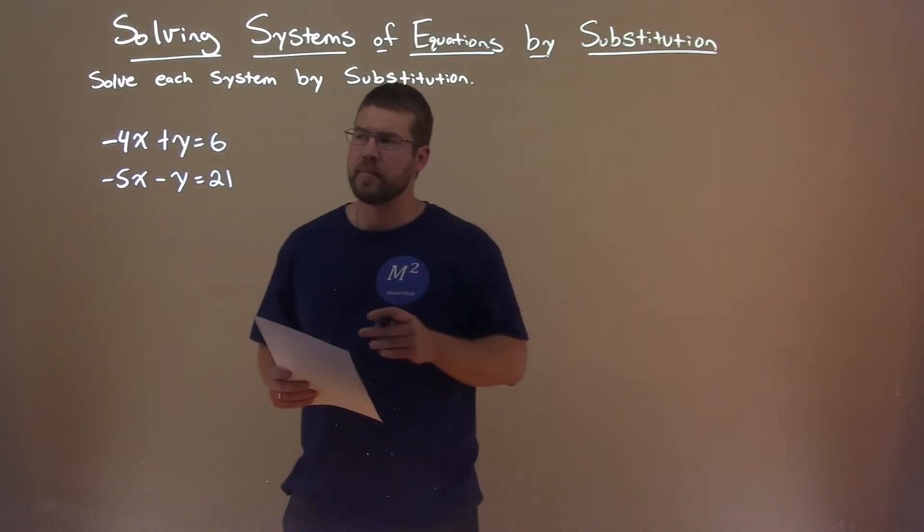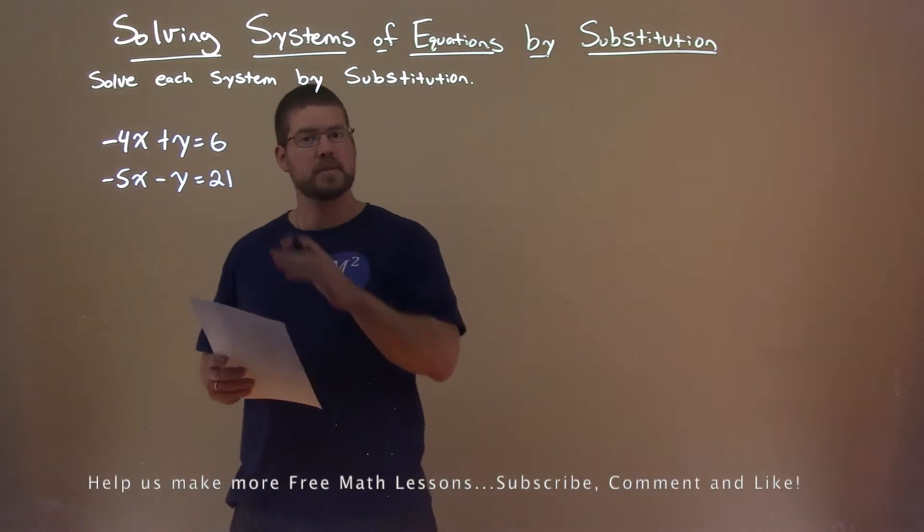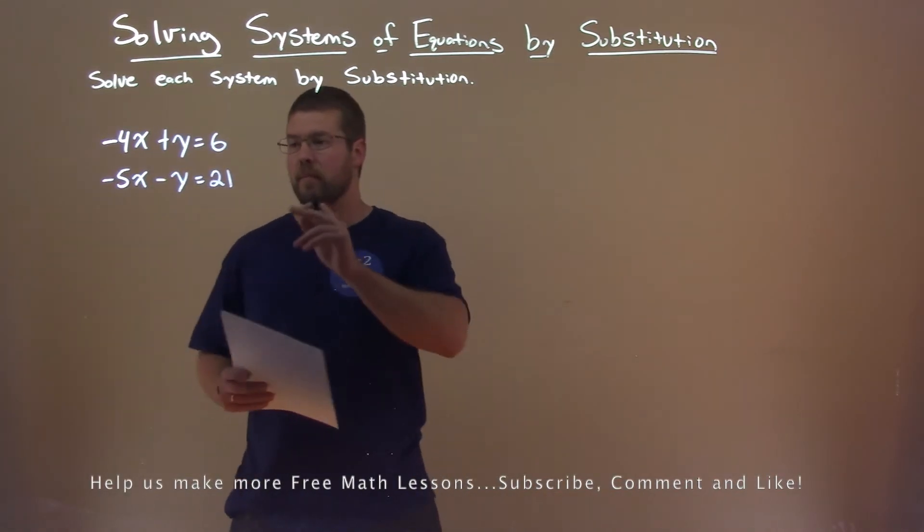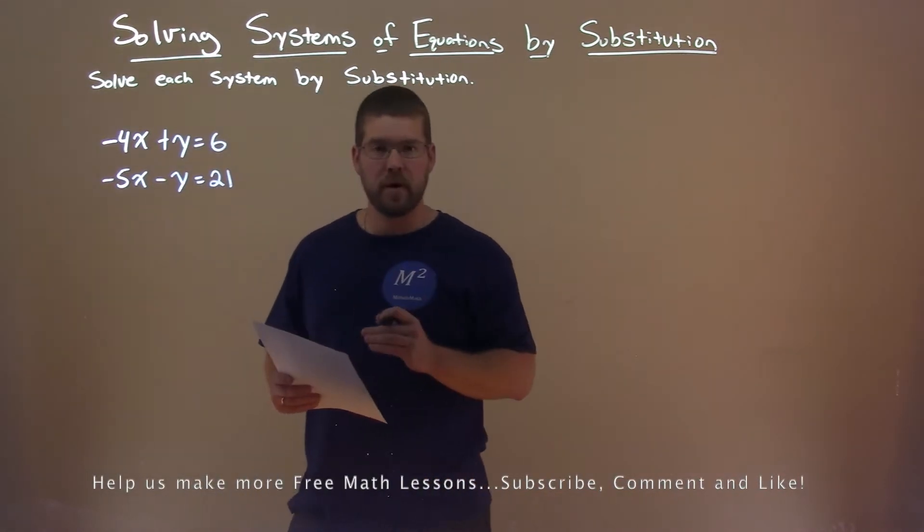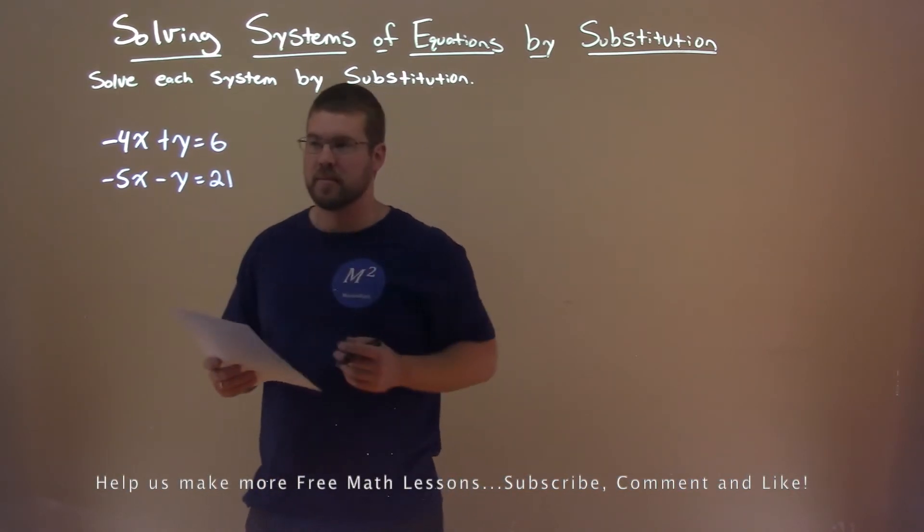We're given this problem here: minus 4x plus y equals 6, minus 5x minus y equals 21, and we want to solve this system by substitution.